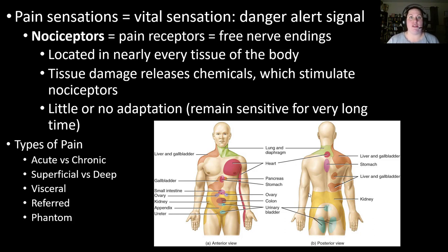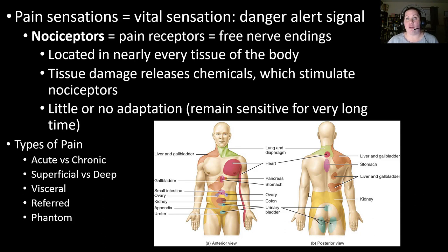Pain sensations are a vital sensation — your danger alert signal. Without pain, extreme and possibly irreversible damage could occur to your body. The pain receptors are called nociceptors, which contain free nerve endings and are located in nearly every tissue of the body. When tissue is damaged, it releases chemicals that stimulate the nociceptors to send the pain signal. Nociceptors have little to no adaptation, so they remain sensitive for a very long period of time.